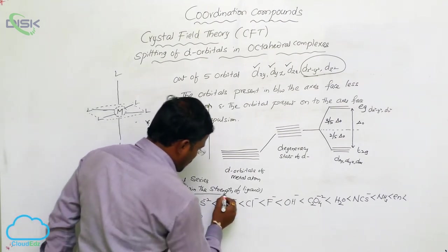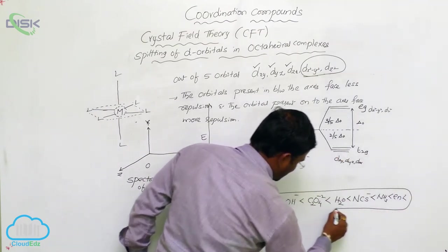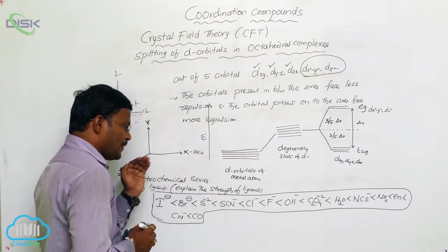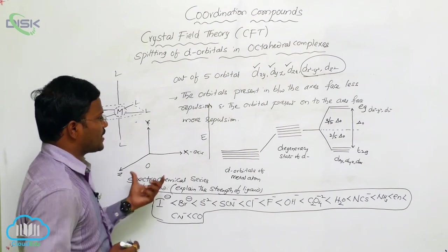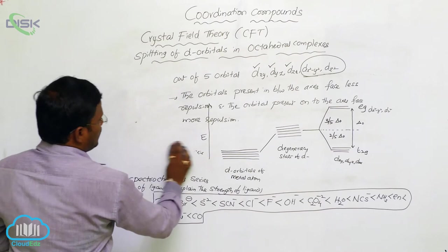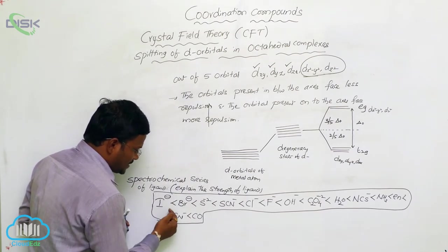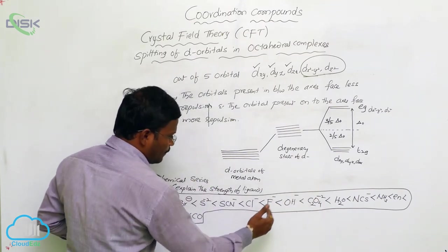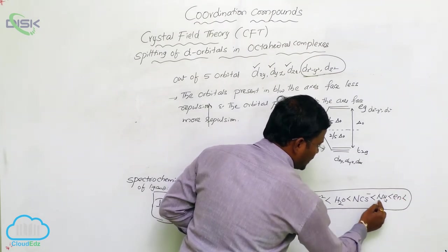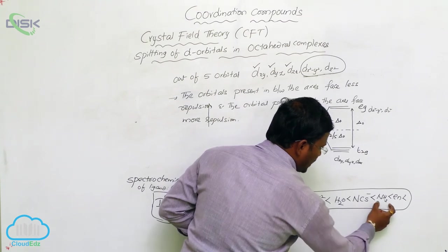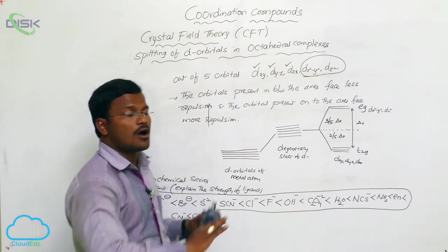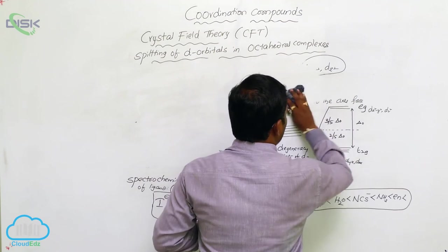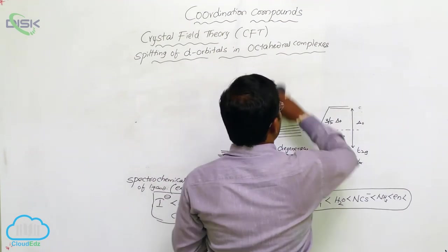This is the most important spectrochemical series of ligands, useful to identify which is a weak field ligand and which is a strong field ligand. The ligands at the initial stages — iodide, bromide, sulfide, thiocyanide, chloride, fluoride, and OH⁻ — are considered weak field ligands. Whereas from ammonia onwards — isothiocyanide, ammonia, ethylenediamine, cyanide, and carbonyls — these are considered strong field ligands.